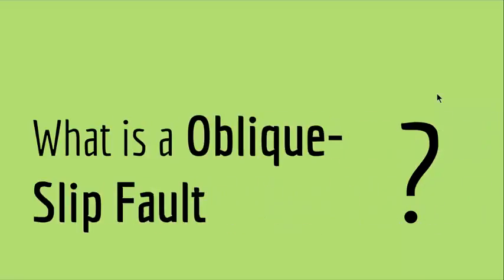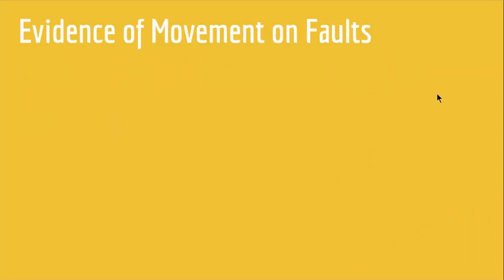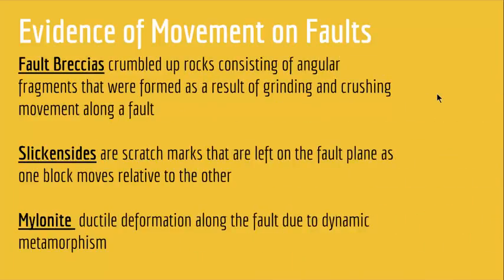The last type of fault is oblique-slip faults. Oblique-slip faults are faults that exhibit both dip-slip and strike-slip movement. Now, talking about evidence of movement on faults — we have a few: fault breccias, slickensides, and mylonites.